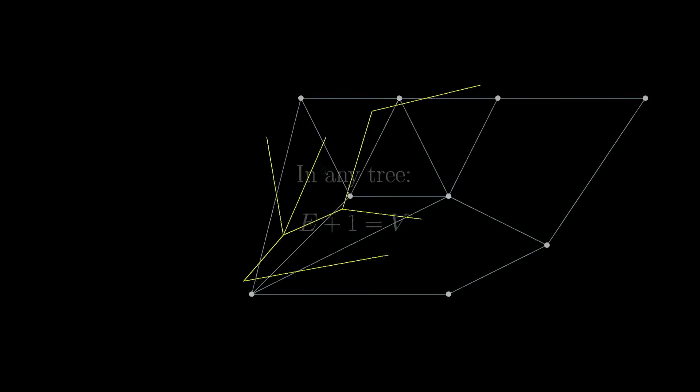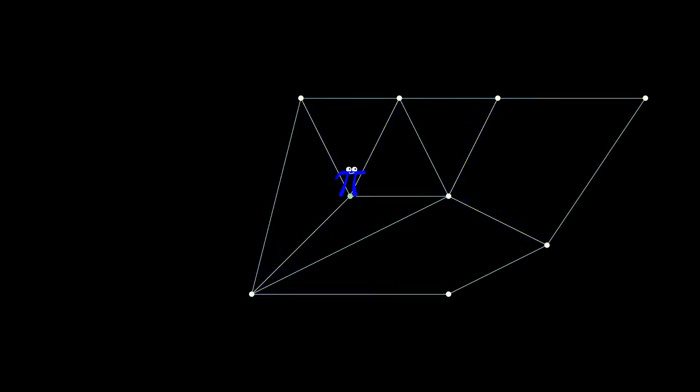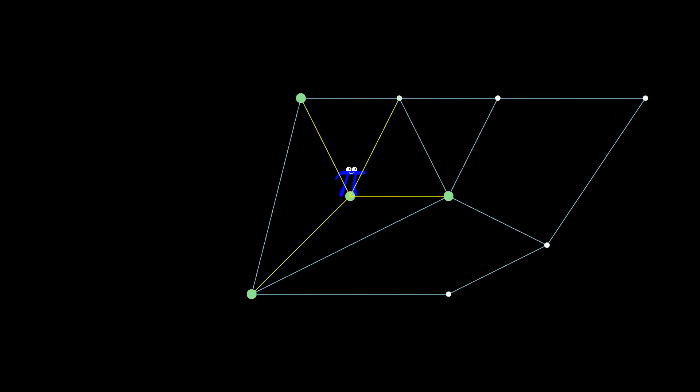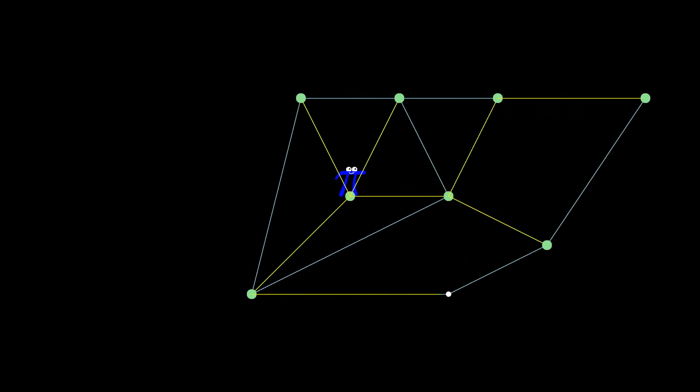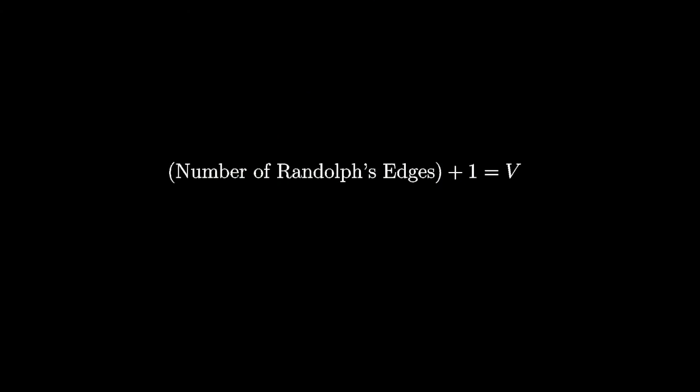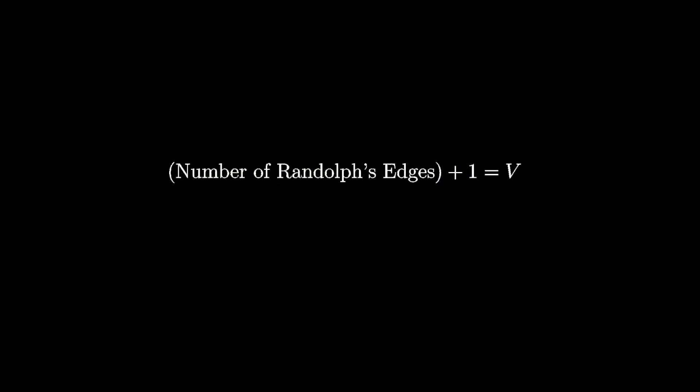Alternatively, within our narrative, you could think of Randolph as starting with one vertex and gaining exactly one more for each edge that he buys in what will become a spanning tree. Since this tree covers all vertices in our graph, the number of vertices is one more than the number of edges owned by Randolph.